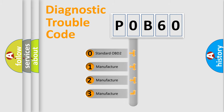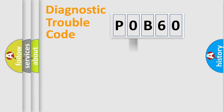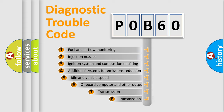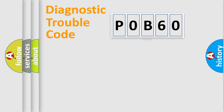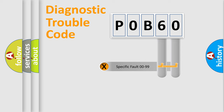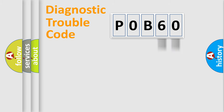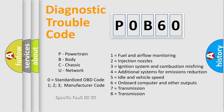If the second character is expressed as zero, it is a standardized error. In the case of numbers 1, 2, or 3, it is a manufacturer-specific error. The third character specifies a subset of errors. This distribution is valid only for the standardized DTC code. Only the last two characters define the specific fault of the group, and this division is valid only if the second character is zero.